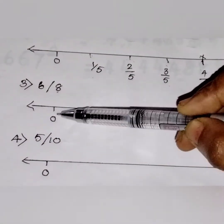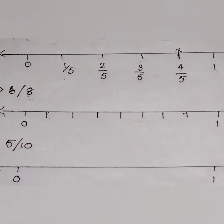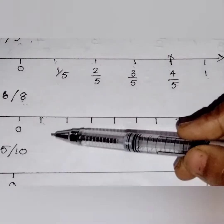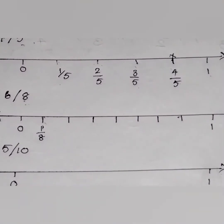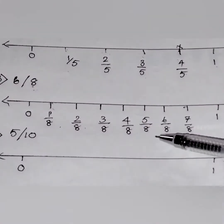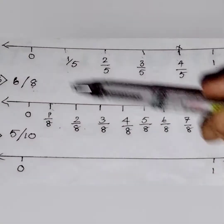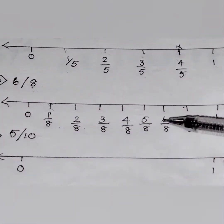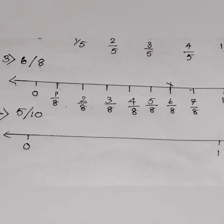Now coming to the next question: 6/8. Since 8 is the denominator, we have to mark 8 divisions. Let us write the fractions: 1/8, 2/8, 3/8, 4/8, 5/8, 6/8, 7/8, and 8/8 is 1. So we have to mark the 6th partition of the number line. I hope it is understood.